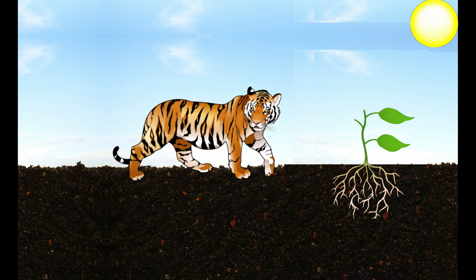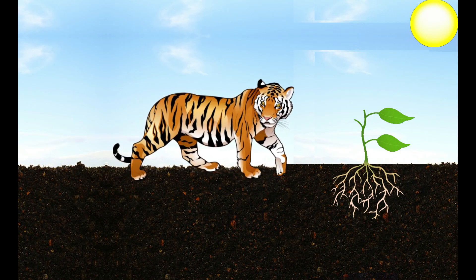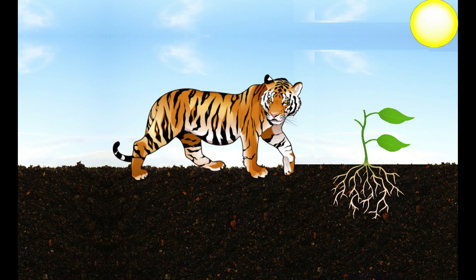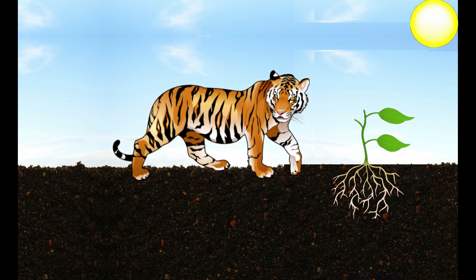The carnivore uses this energy to perform physical activities and grow. As it grows, energy gets stored in the form of its muscles and bones.